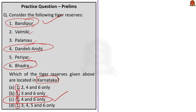As discussed in the article, tiger reserves in Karnataka are Bandipur, Bhadra, Dandeli-Anshi, Nagarahole and Biligiri Ranganatha Temple — five tiger reserves. Valmiki Tiger Reserve is in Bihar, Palamau Tiger Reserve is in Jharkhand, and Periyar Tiger Reserve is in Kerala.